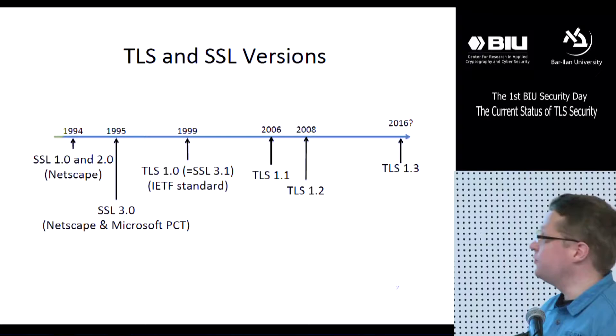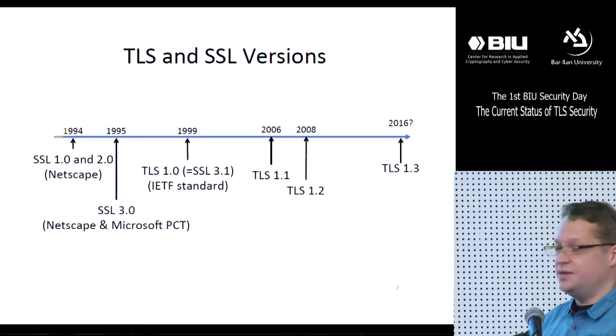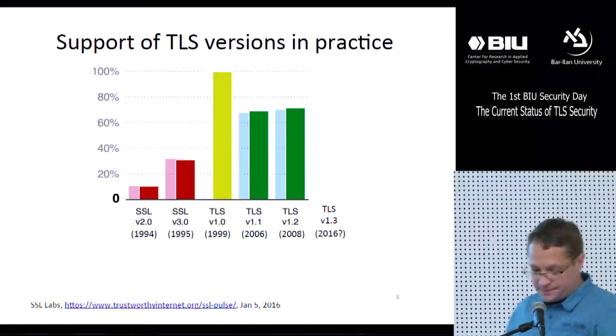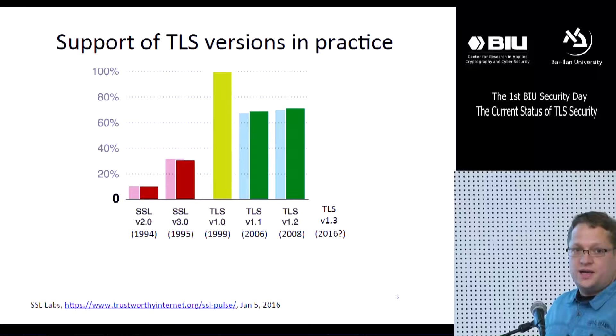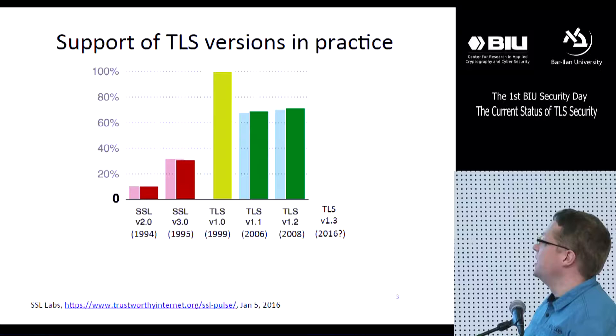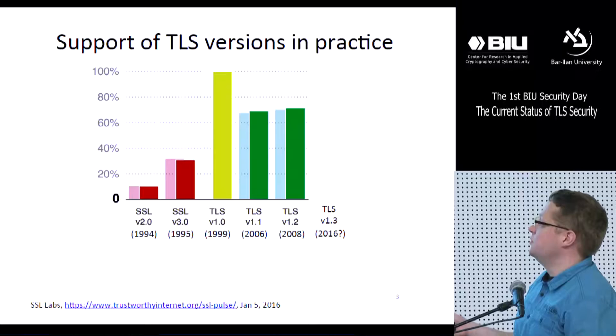Here's an overview of different TLS versions. In this talk, I will discuss TLS 1.3, which is going to be finalized hopefully this year. The current version is TLS 1.2, standardized in 2008. But this doesn't mean everybody uses it — the most widely used version is TLS 1.0, supported by nearly 100% of all web servers, and even old SSL versions considered insecure today are still used by a surprisingly large number of web servers.